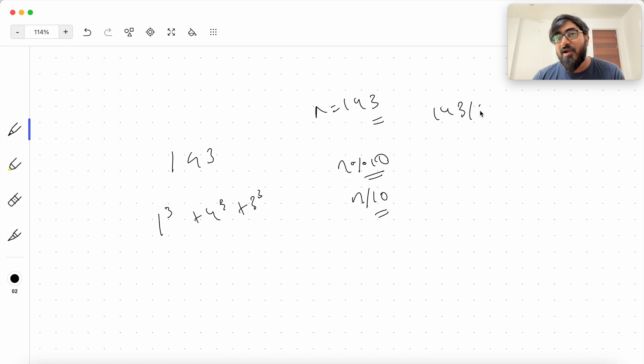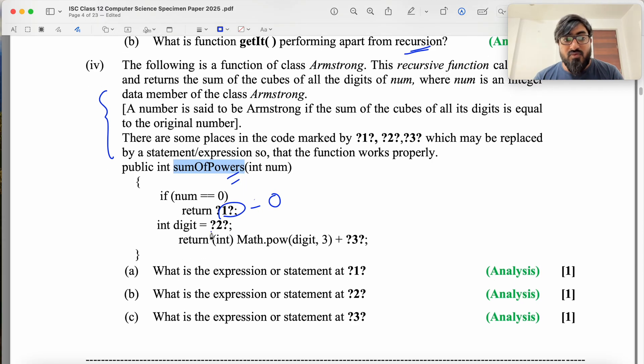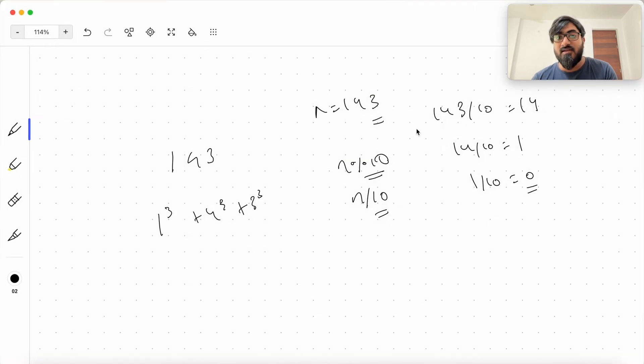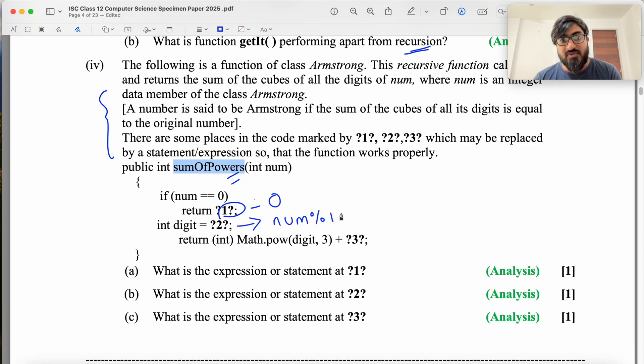So this will give us the digit. This will remove the digit. And recursion will stop when num equal to 0. That is when you do 143 by 10, you get 14. You get 14 by 10, you get 1. You get 1 by 10, you get 0. This is the stopping condition that you have removed all digits. So this is going to be 0. If n is 0, you return 0. There is nothing to sum. Then this 2 is filled by the digit which we extract using this. So this is going to be num percent 10.